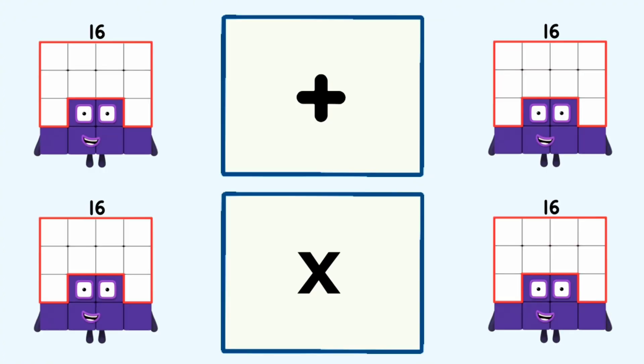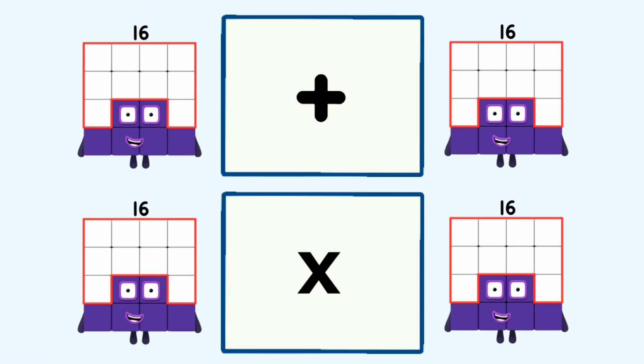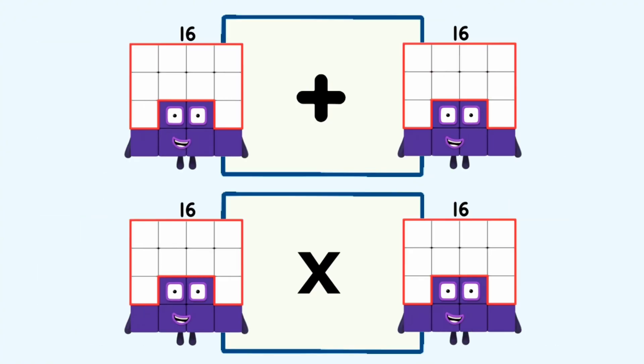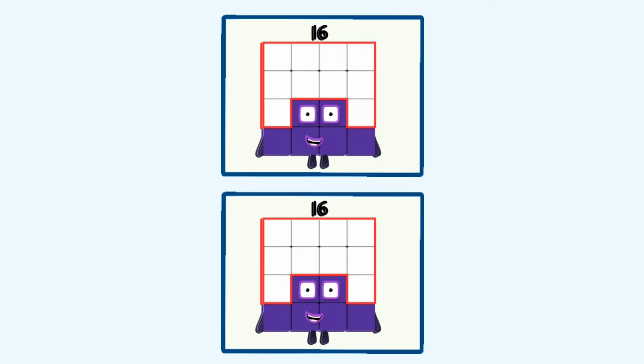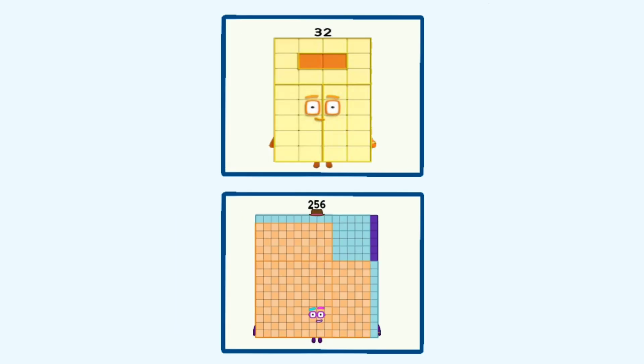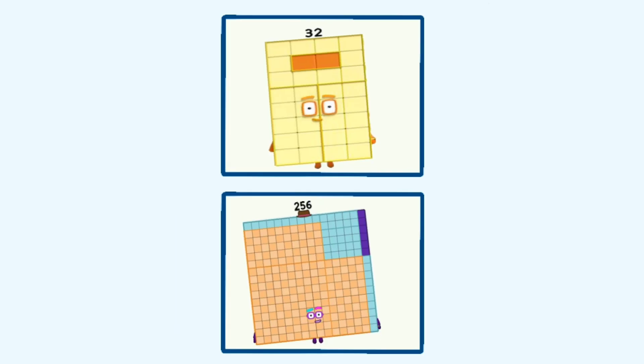16 plus 16 and 16 times 16 equals 32 and 256.